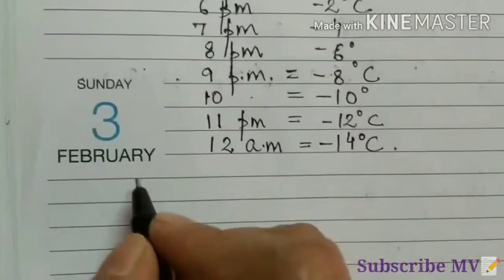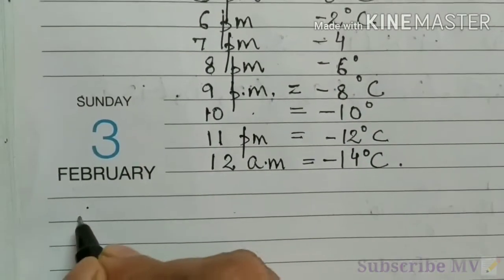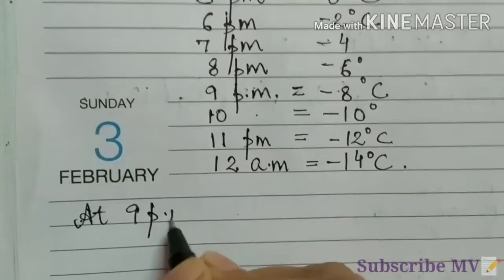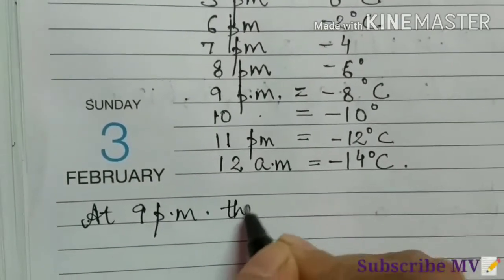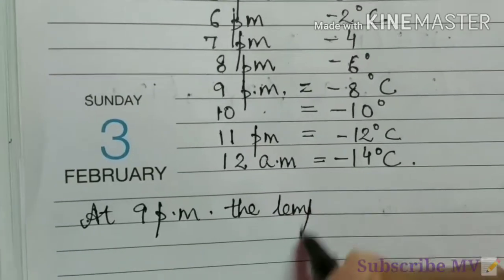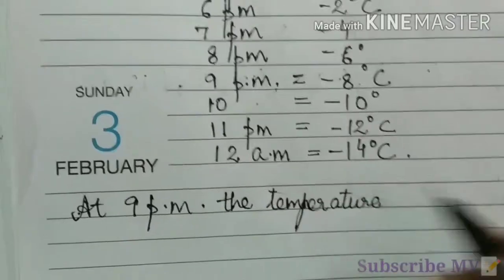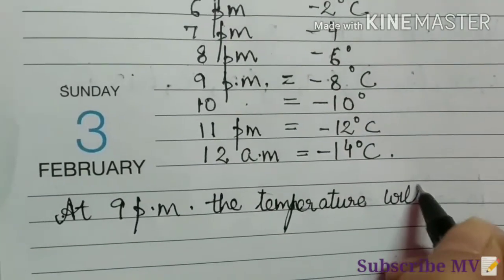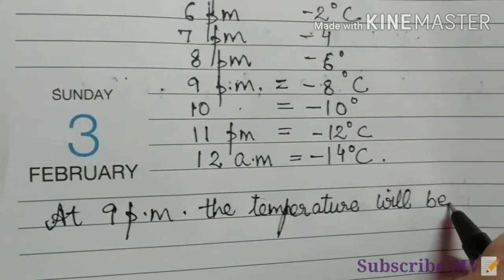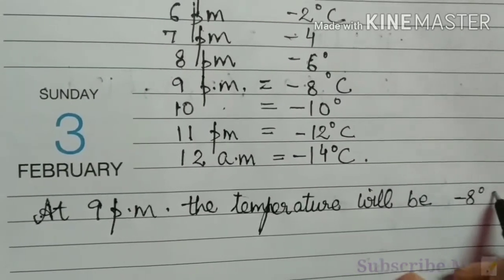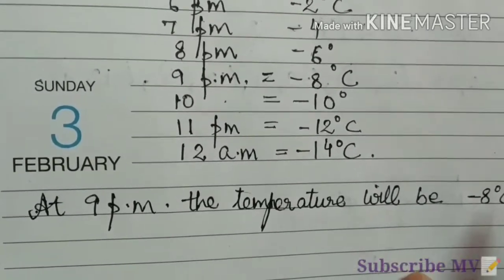So how to write? At 9 p.m. the temperature will be minus 8 degrees Celsius. And second,